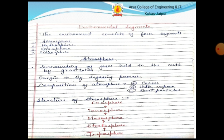Structure of the atmosphere. The layers of the atmosphere are: first, troposphere; stratosphere; mesosphere; ionosphere; and the last one is exosphere.